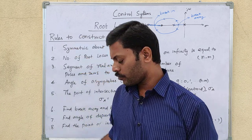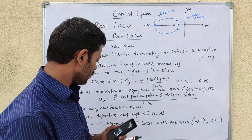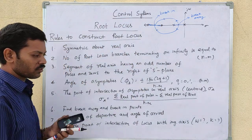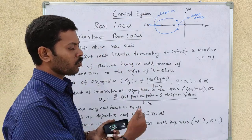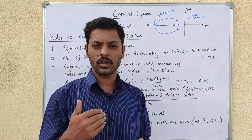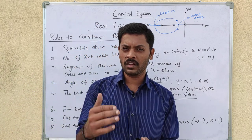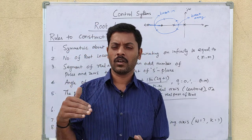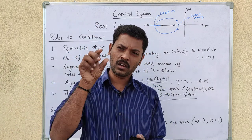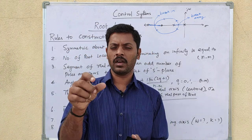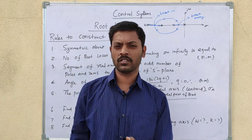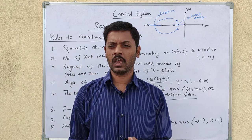The seventh rule is to find the point of intersection of the root locus with the imaginary axis. To find this, you can determine where the root locus crosses the imaginary axis, find the omega value at that crossing, and then find the corresponding gain K value.